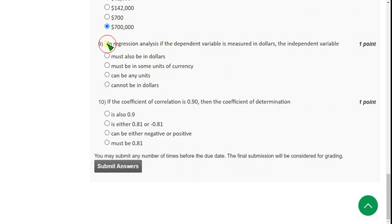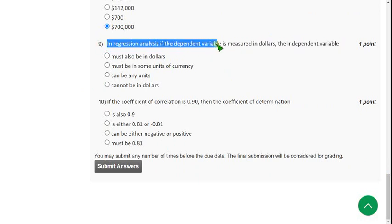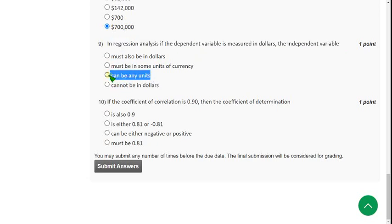And moving on to the next one. That is ninth question. In regression analysis, if the dependent variable is measured in dollars, the independent variable, then what happens? So the independent variable can be of any units. That is third option. It can be any units.